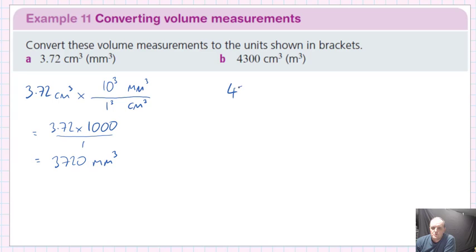So then, 4,300 centimeters cubed, we're going to multiply that by our unit fraction. We have centimeters, centimeters goes underneath, meters goes on top, but we want cubic.